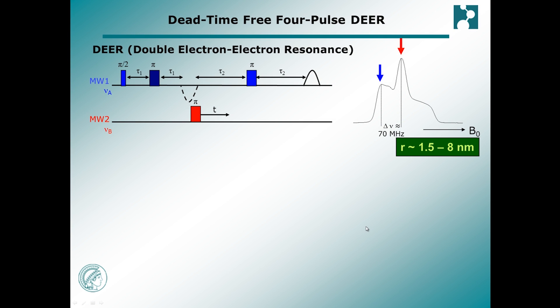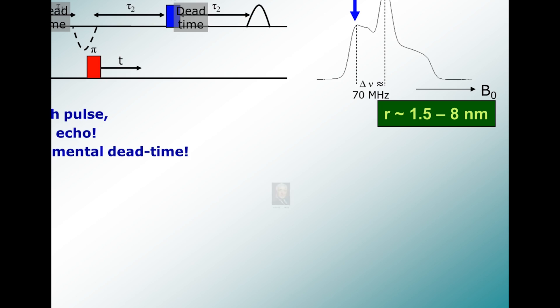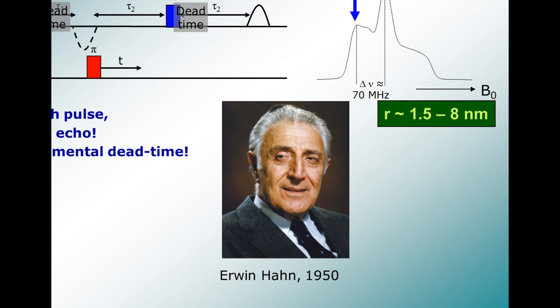In order to record DEER spectra free of artifacts, the dead time that inevitably follows pulse excitation has to be overcome. We solve this problem by simply adding a refocusing pulse that creates echoes which occur after the dead time has elapsed. This approach is well established in NMR and is based on the ingenious work of Erwin Hahn back in the 1950s.